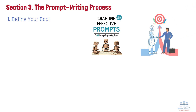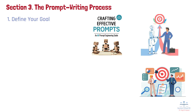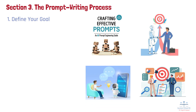A well-defined objective serves as the foundation for your prompt. For instance, if you're seeking advice on marketing strategies, specify whether you're interested in digital marketing, content marketing, or social media marketing. This clarity directs the AI to generate a response that aligns with your specific needs.